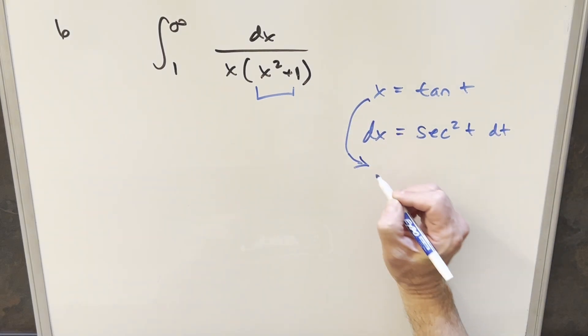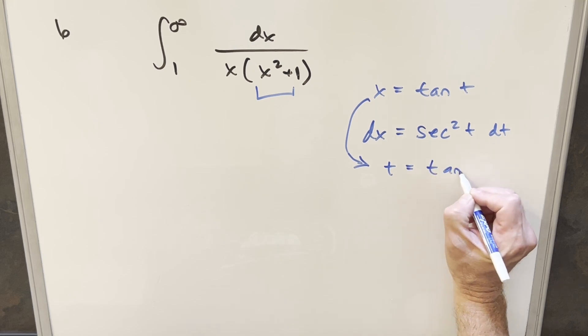And then while we're at it, I don't know if we need it, but let's get a value for t. So I can take arctan on both sides. So t is just going to be arctan of x.